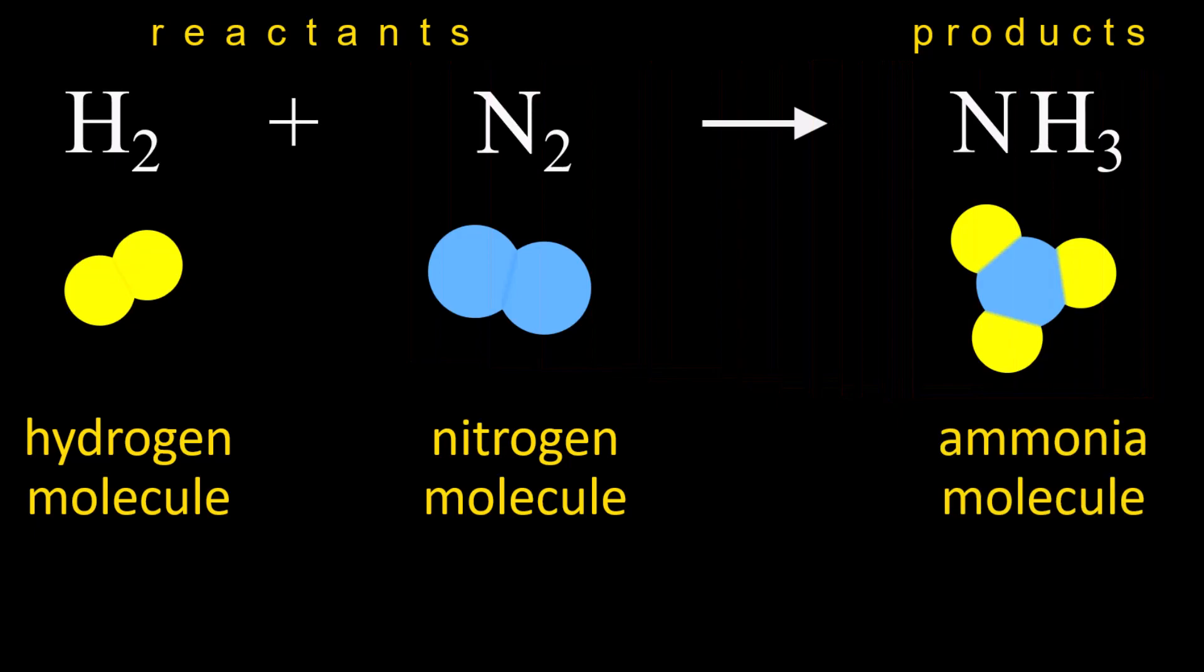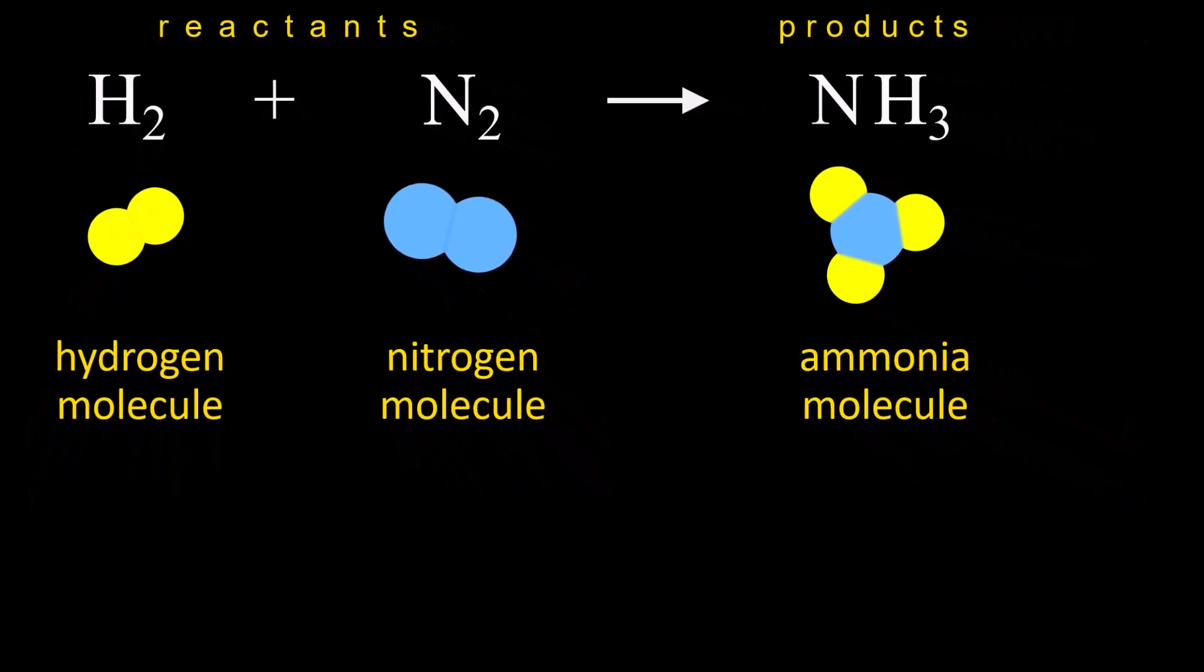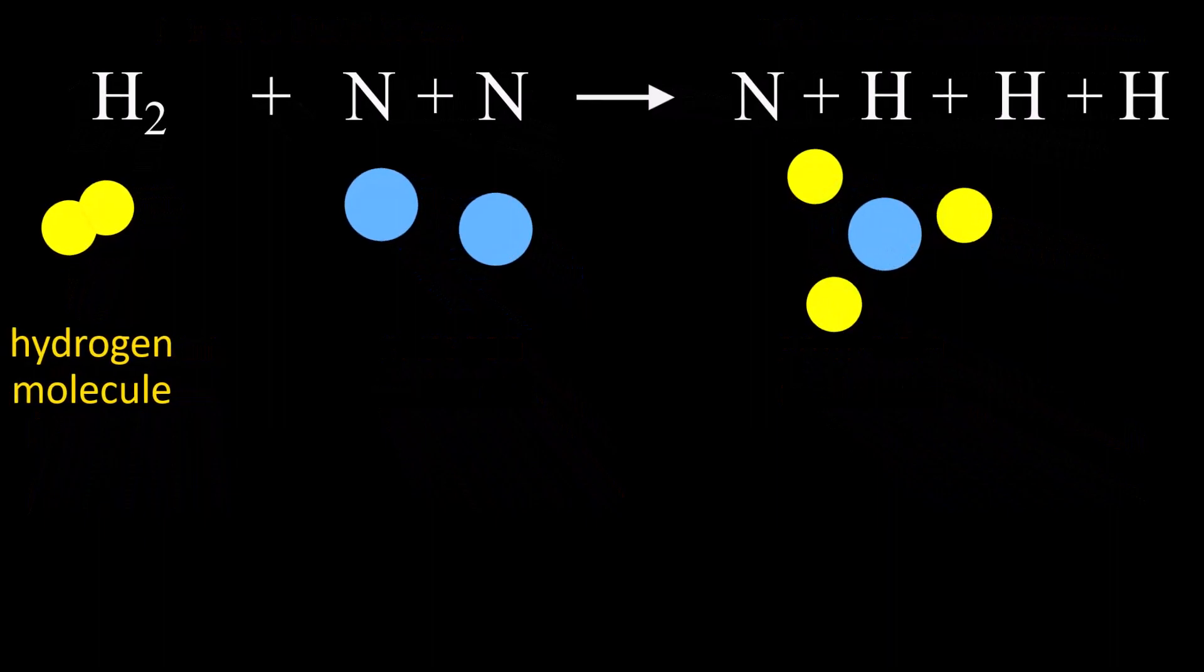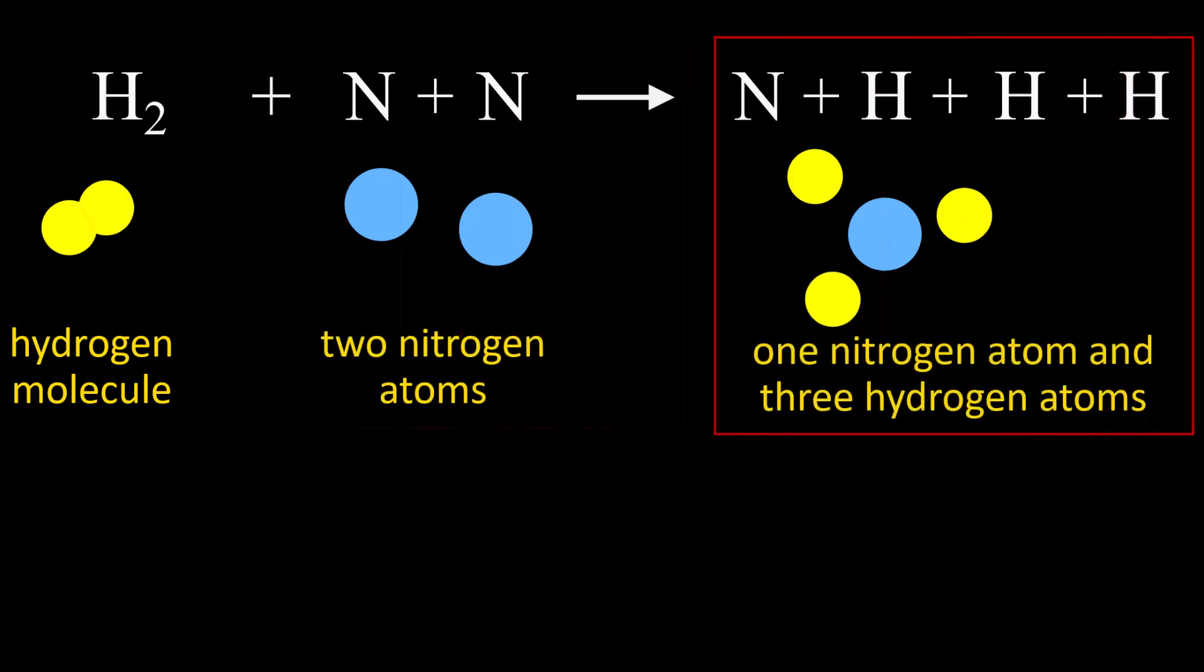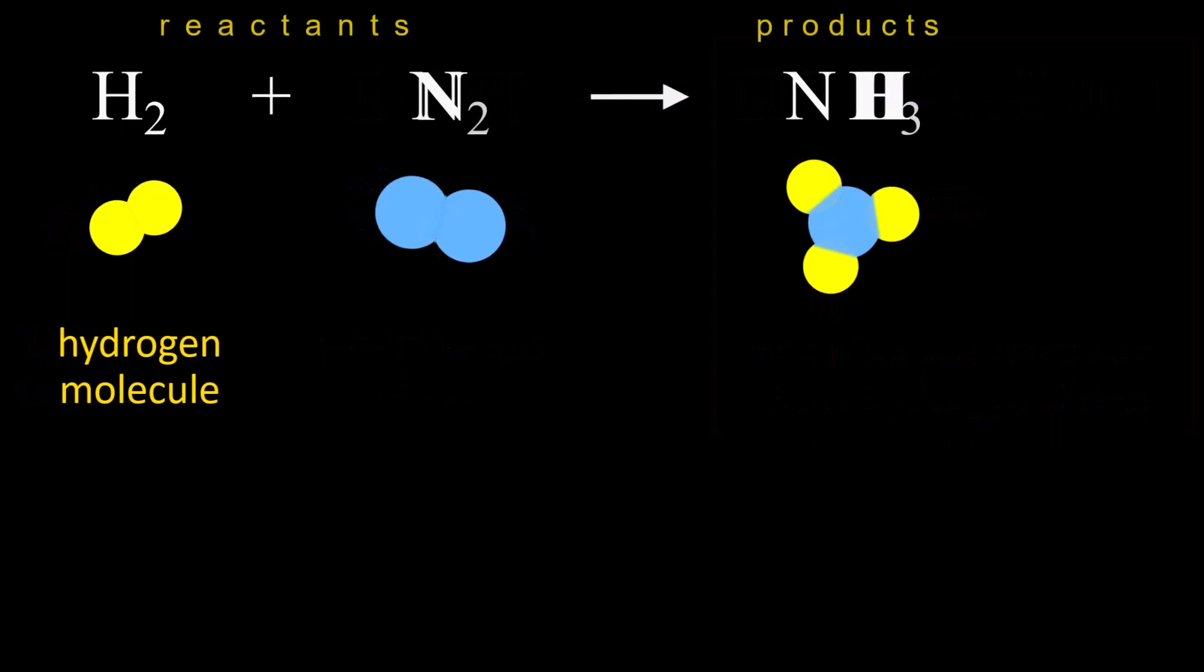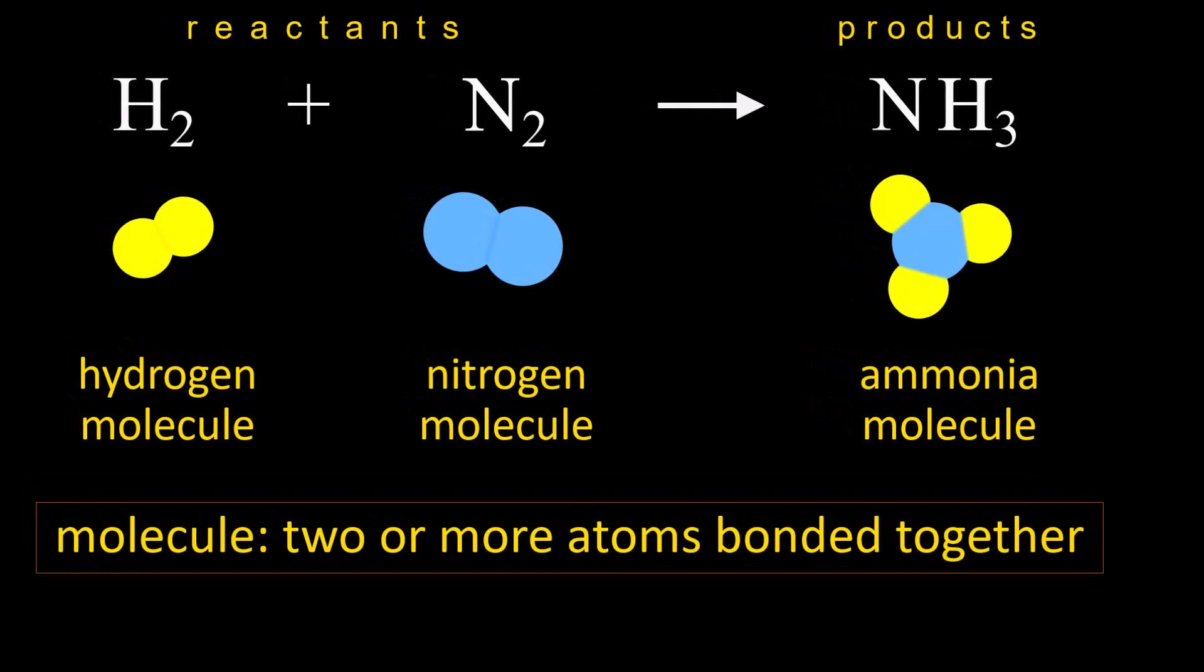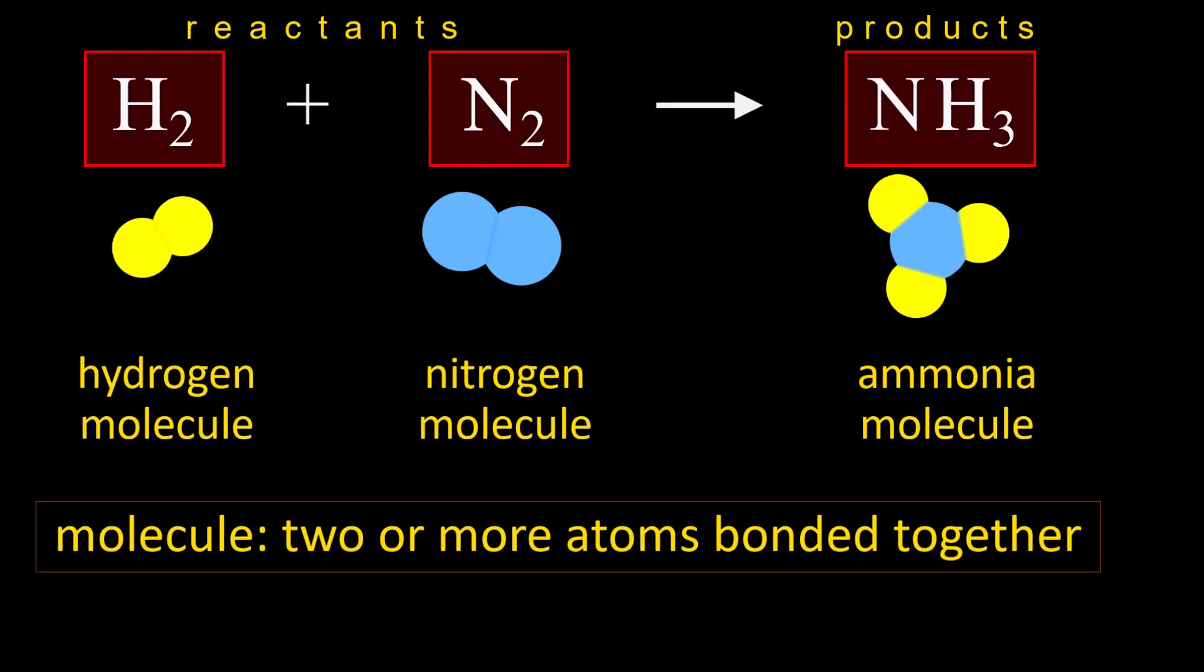An important thing to understand is the difference between atoms and molecules, in part because that is what the symbols are showing us. Atoms are just single units of an element differing by the amount of protons each element has. This is showing us two nitrogen atoms. And here is one nitrogen atom and three hydrogen atoms. When those atoms are bonded, they become molecules. Molecules are what we call two or more atoms bonded together. This reaction occurs between molecules, not individual atoms, and so it is important to understand that this is what the symbols are telling us.